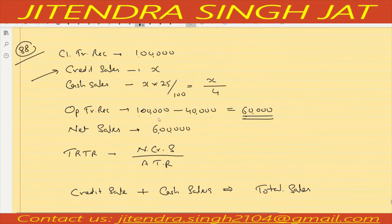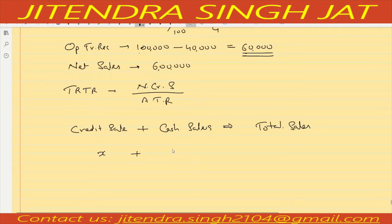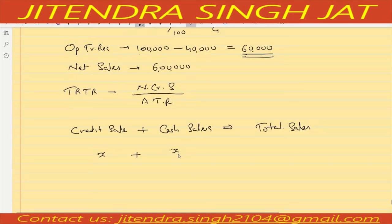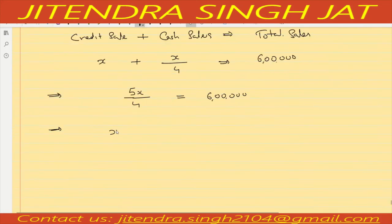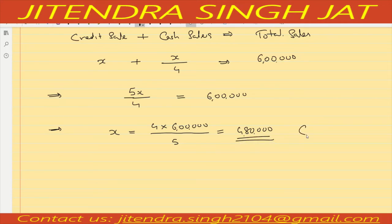Credit sales plus cash sales equals total sales. Credit sales is x and cash sales is x by 4. So x plus x by 4 equals 5x by 4 equals 6 lakh. Cross multiplying: x equals 4 into 6 lakh divided by 5 equals 4 lakh 80,000. So credit sales is 4 lakh 80,000.